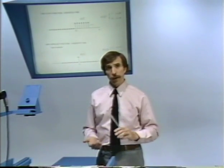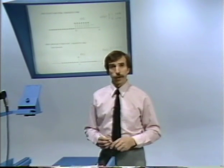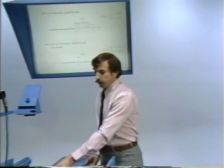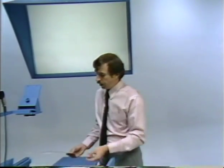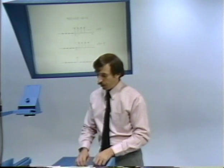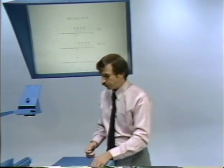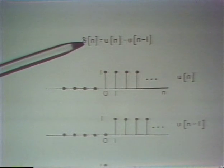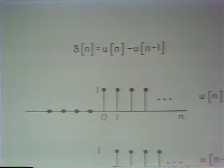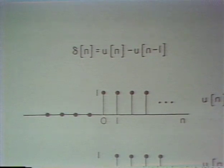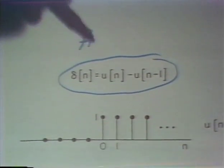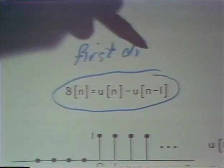In fact, they are also related to each other in a straightforward way mathematically. Specifically, the unit impulse can be related to the unit step through a relationship: delta of n, the unit impulse, equals a unit step minus the unit step delayed. So mathematically, the relationship is what is referred to as a first difference.